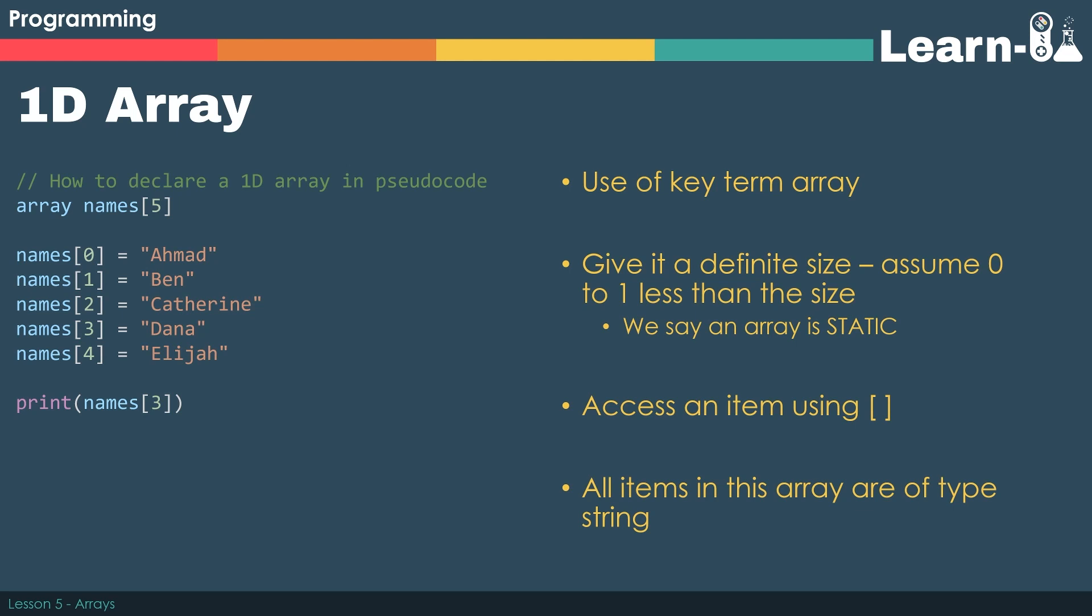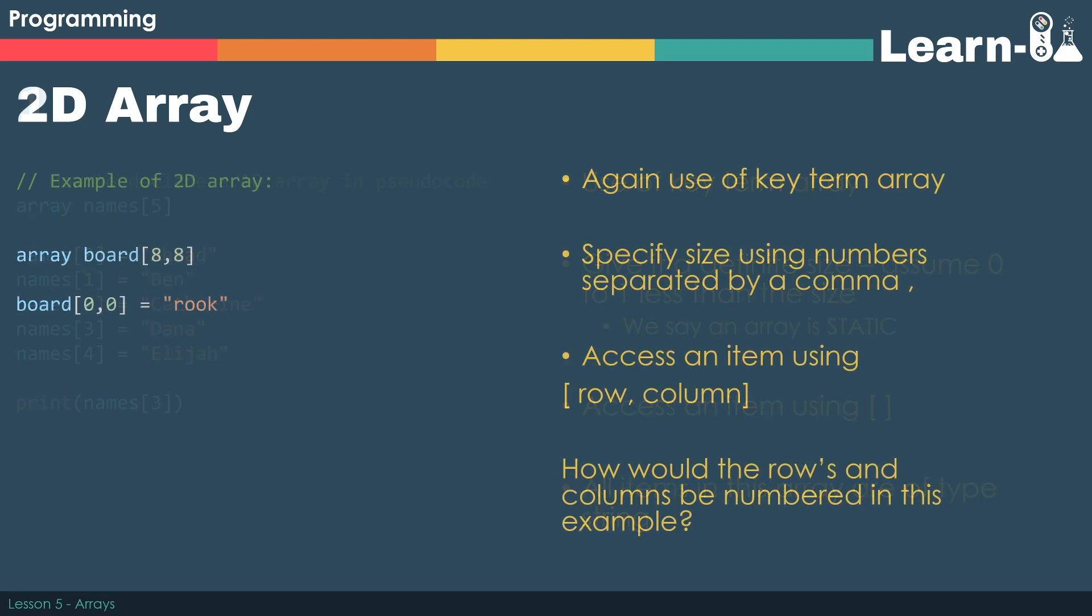It's always one less than the size of the array. In our example, if we wanted to access Ben, we'd have to use names and in square brackets index one. A 2D array is very similar to a 1D array, apart from we have to specify both a row and a column. So array board[8,8] is a 2D array that has 8 rows and 8 columns. How do you think they might be numbered in this particular example?